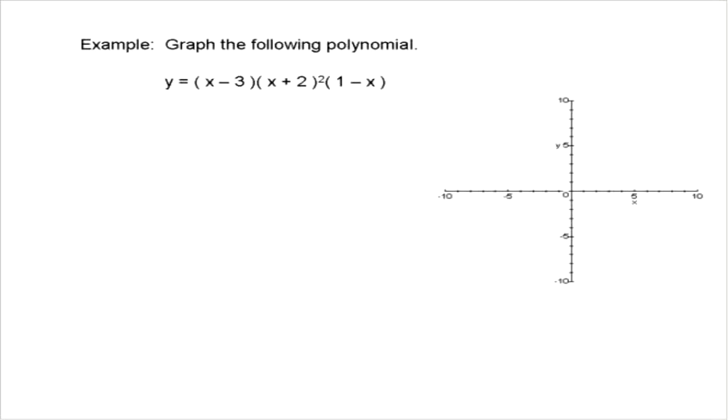So the first thing we're going to do is determine what the roots are of this polynomial. The roots are where y equals 0. So what makes y equal to 0? This is just like we solve polynomial equations. Well, y is going to equal 0 when x equals 3, when x equals negative 2, and when x equals 1. Those are our roots.